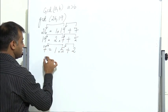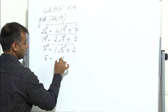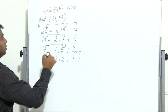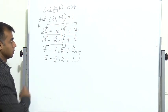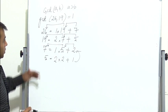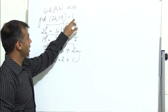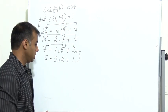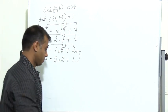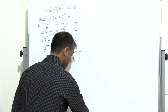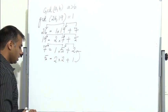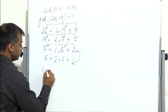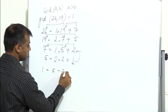Replace 7 by 5 and 5 by 2: 5 equals 2 into 2 plus 1. Since 1 divides 2, the GCD is 1. Now, the second part requires expressing 1 as an integer linear combination of 26 and 19. We need to work backwards from the last step. So I have 1 equals 5 minus 2 into 2.